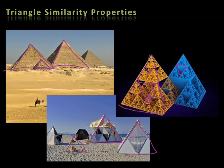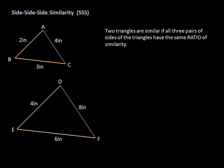There are only three similarity properties, versus the congruence ones which are a little bit more. The first one sounds a lot like the triangle congruence property of Side-Side-Side, but this is actually similarity Side-Side-Side. The difference between congruence and similarity is that we're looking at the sides for the same ratio.